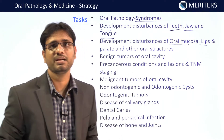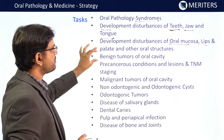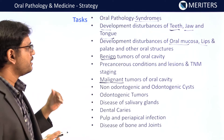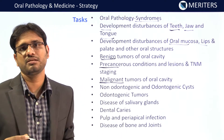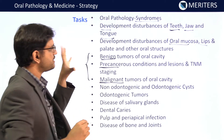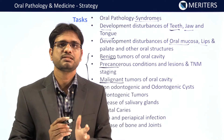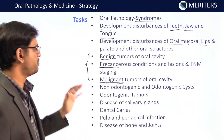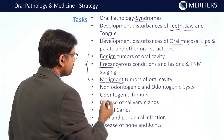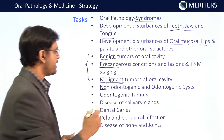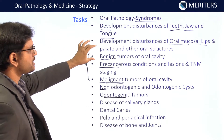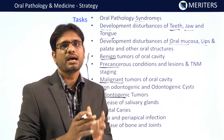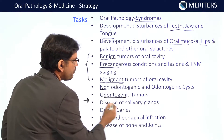Next is benign tumors of the oral cavity, along with malignant tumors. You should also know pre-cancerous conditions, pre-cancerous lesions, and TNM staging. Although there is a lot of information to remember, the exam mainly asks about prototype lesions and generic ones. This is important both for your exam and for your fundamentals. Then there are non-odontogenic and odontogenic cysts and odontogenic tumors. Non-odontogenic tumors include benign and malignant tumors, and odontogenic tumors like ameloblastoma are asked in detail.